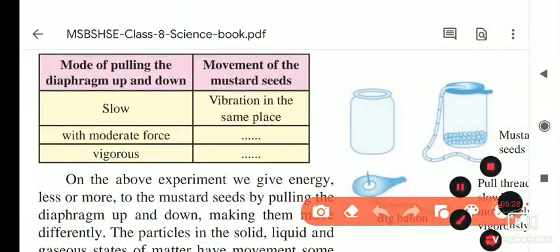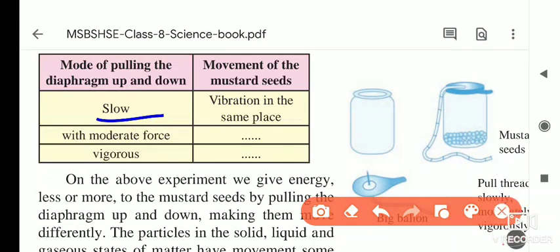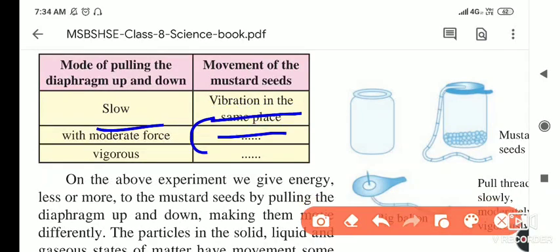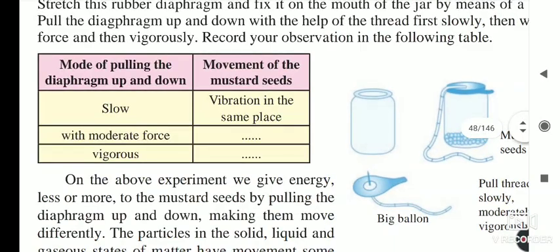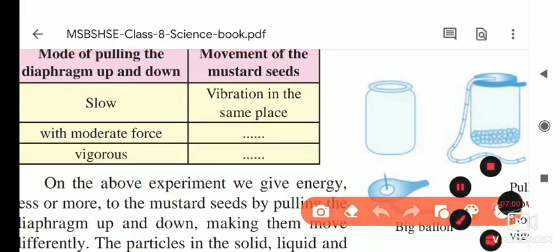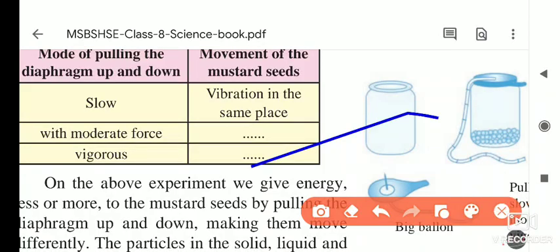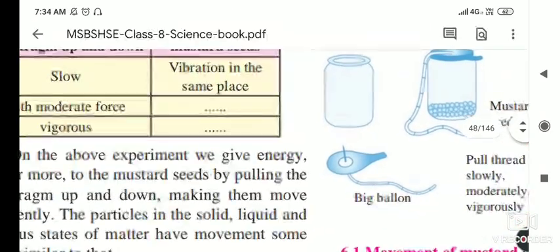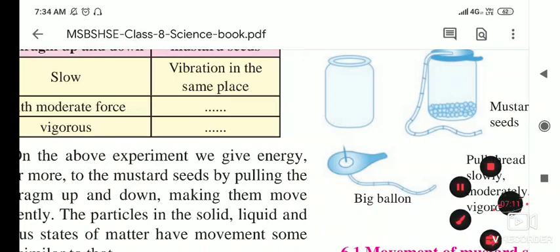When we pull the rubber diaphragm slowly, the seeds vibrate only in the same place. When we pull it moderately, the vibrations increase and the seeds move more. When we pull it vigorously, the seeds vibrate very fast and jump much higher. Let us now see this activity as demonstrated in the textbook.